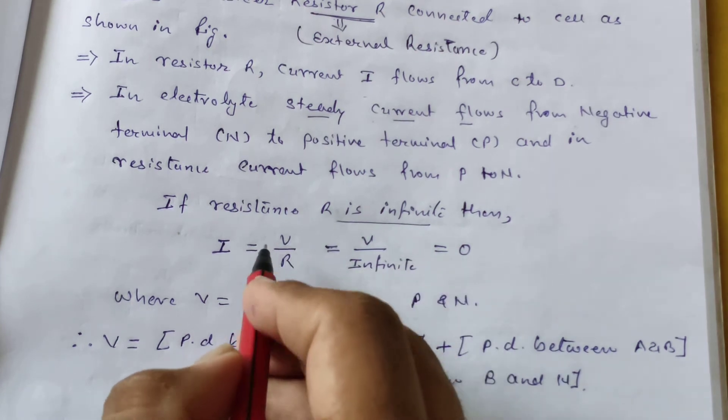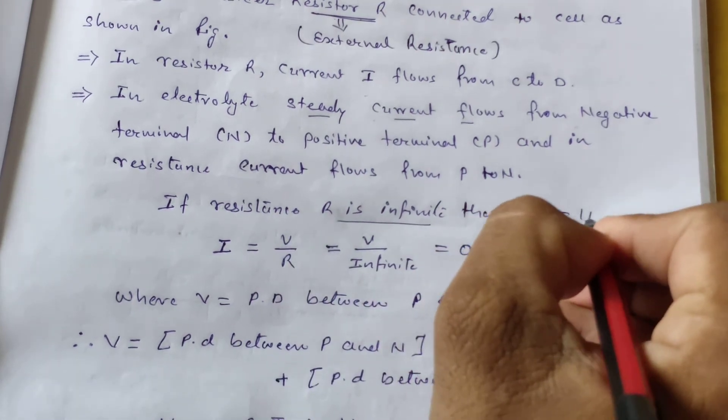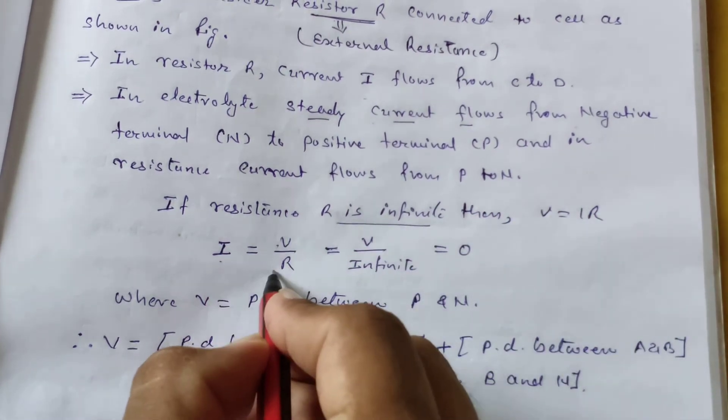As per Ohm's law, V = IR, so I = V/R. If resistance is infinite, then V divided by infinity equals zero, meaning no current is flowing.